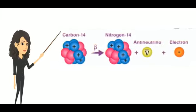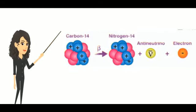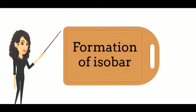This is the example of beta decay. The original nuclide after beta decay converts into an isobar.